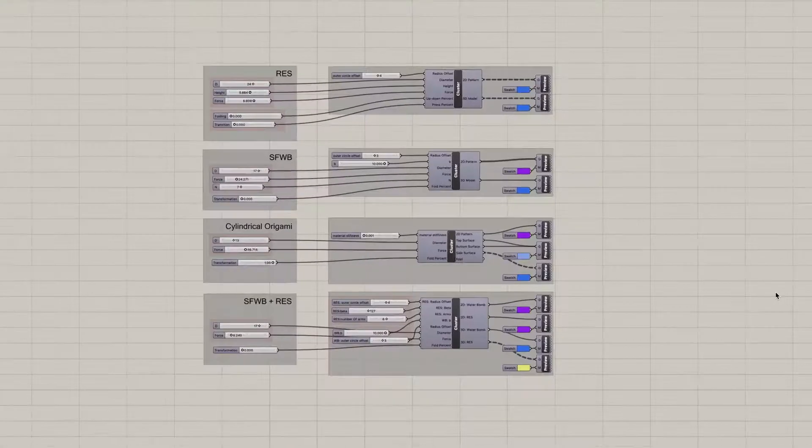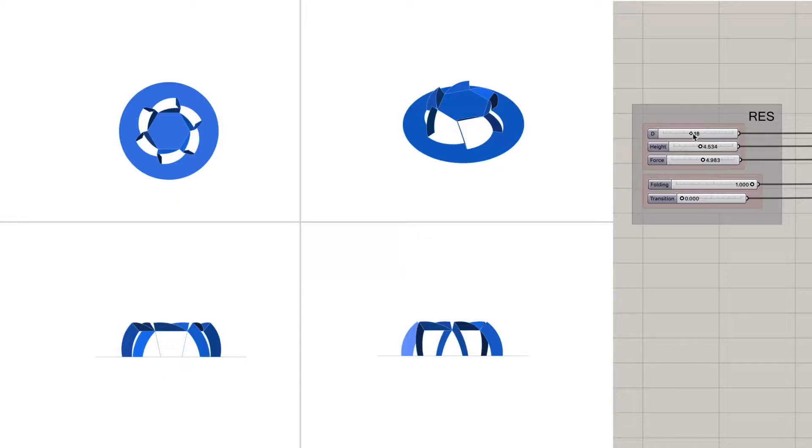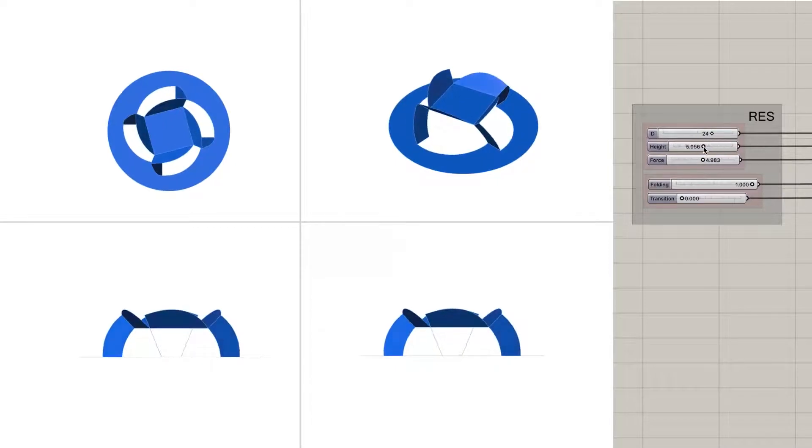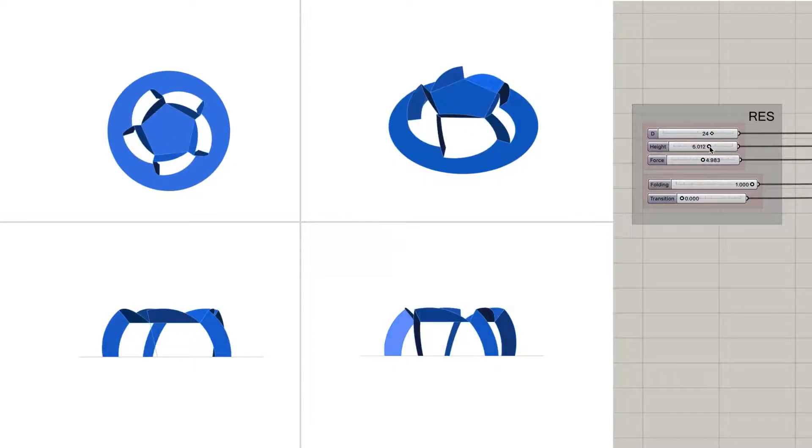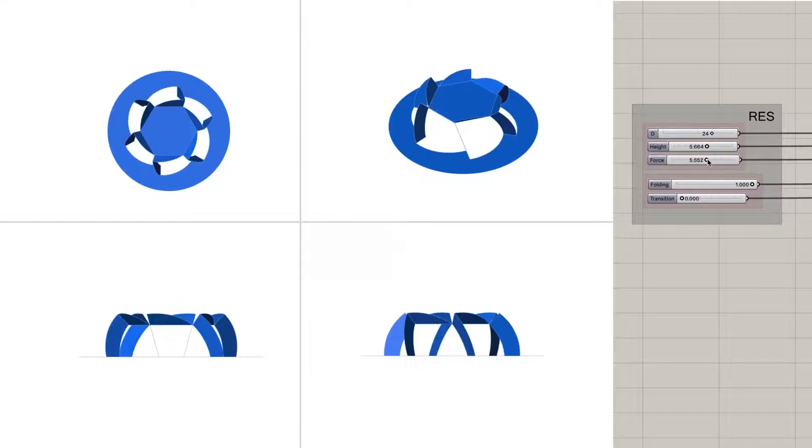To make the Kirigami haptic swatches accessible to creators, we made a plug-in software that generates custom cut and fold patterns for buttons based on the user's desired haptic feedback properties called the pattern generator. Based on Grasshopper, it allows user to choose among the four primitive structures.